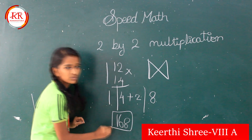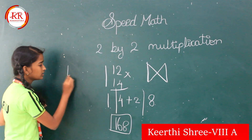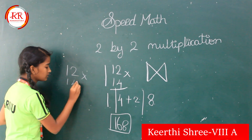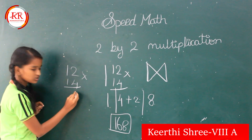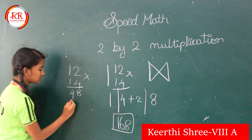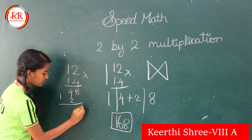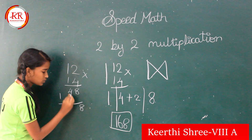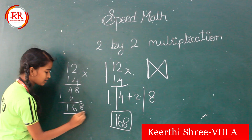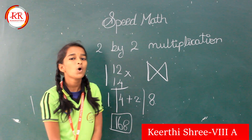Let us check in the normal multiplication. 2 into 50. 2 fours are 8. 1 four is 4. 1 two is 2. 1 one is 1. So 4 plus 2 is 6. So we get the same answer.